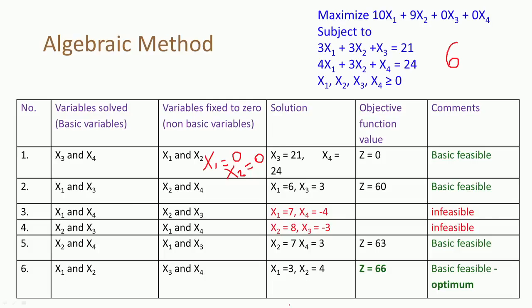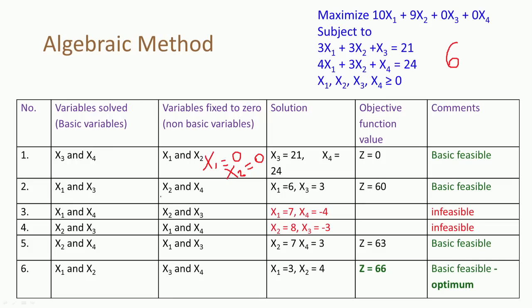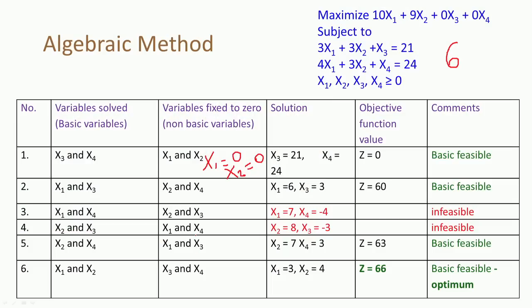Out of these six solutions, solutions 3 and 4 are infeasible. We also have to remember that all six solutions are basic solutions, which means the non-basic variables are fixed to 0. These six solutions have been obtained by fixing the non-basic variables to 0. Now let us go back to the graphical method and try to see where these six solutions lie in the graph.